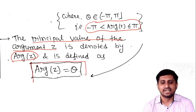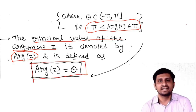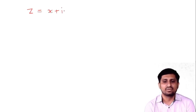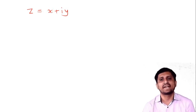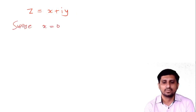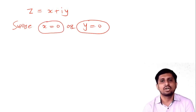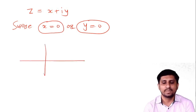In our notation, θ refers to the principal argument. Now, to understand how to find the principal argument, suppose z = x + iy. If x = 0 or y = 0, your complex number lies on one of the axes — either the x-axis or the y-axis.